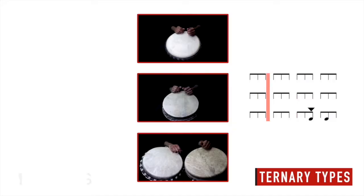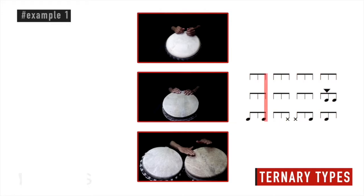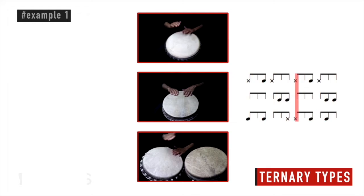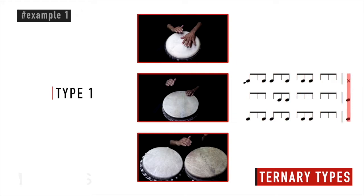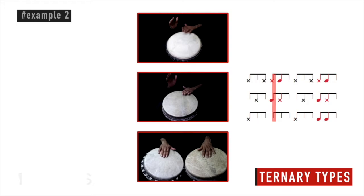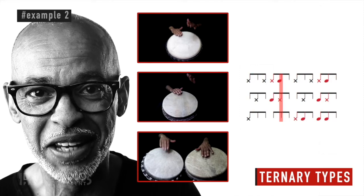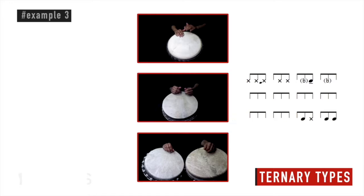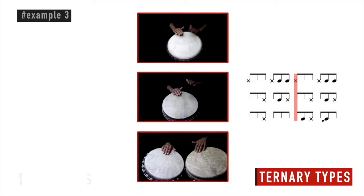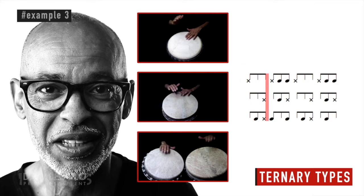Here are some examples of type 1 and type 2 grooves. There's no second cadence in this groove, it's a type 1. Now there's a second cadence, so it's a type 2. Again, no second cadence, so it's a type 1.